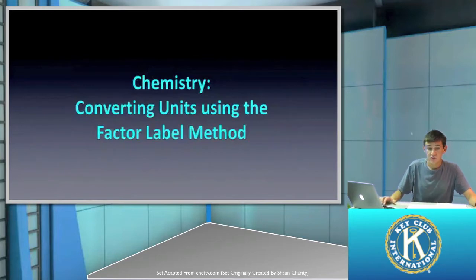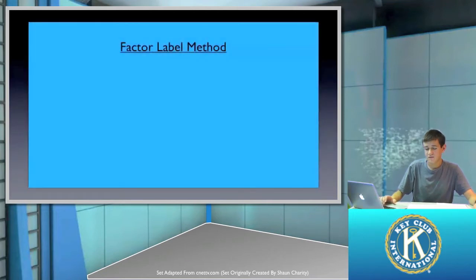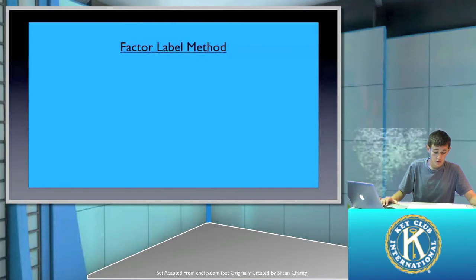The method that we're going to be using is the factor label method. The factor label method is a very simple principle that is based on removing units that are unnecessary and that are unwanted and canceling them out in order to leave the units that we want.